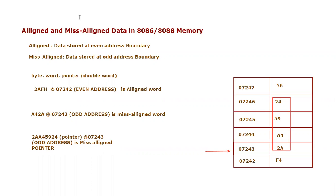To show you an aligned pointer, if your pointer starts at address 07244 — which is an even address boundary — then it is an aligned pointer. I hope you now understand the concept of aligned and misaligned data for the 8086 and 8088 memory.